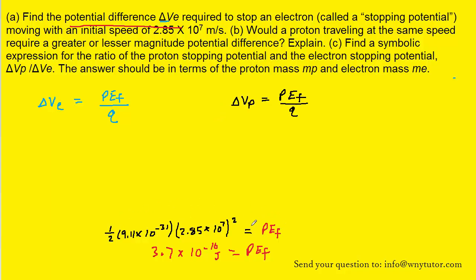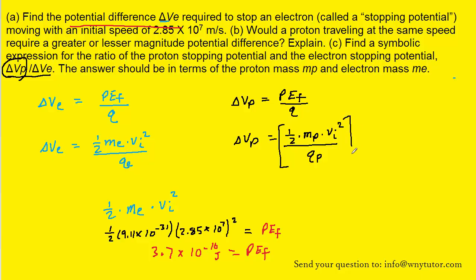And so we can replace potential energy final with this expression here. And we'll do that for the electron as well as the proton. The only difference with the proton is that we would have the mass of the proton substituted in. So let's go ahead and do that. Now, to produce the ratio that they're requesting, all we have to do is take the delta Vp, which is this value, and divide it by delta Ve, which is this value here. So let's go ahead and do that next.